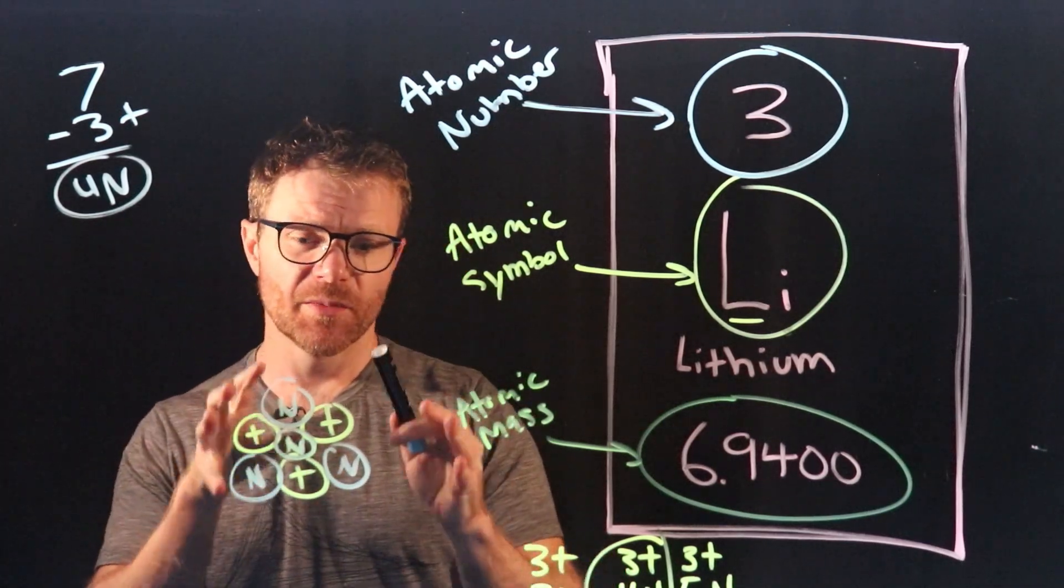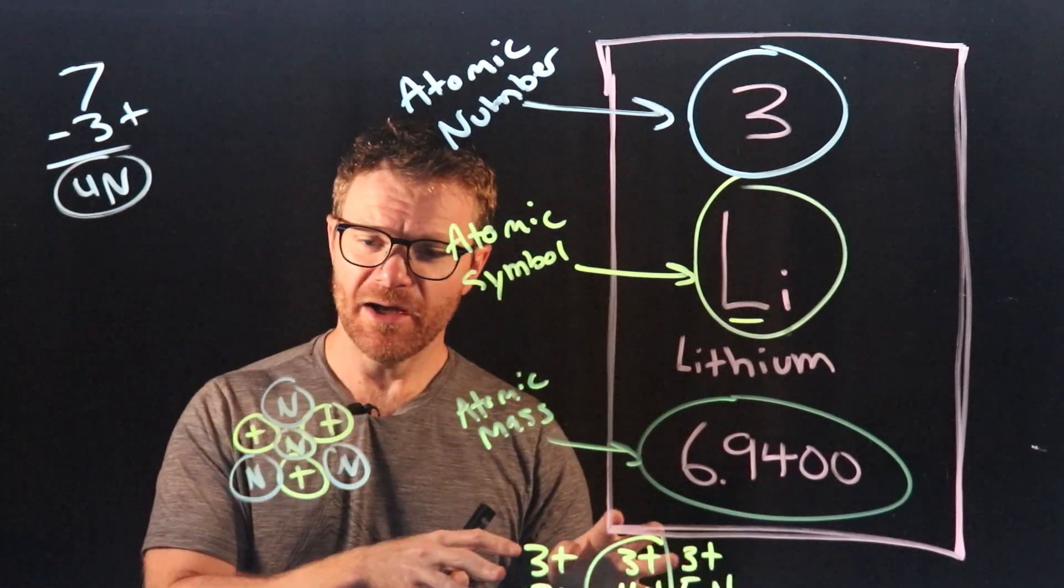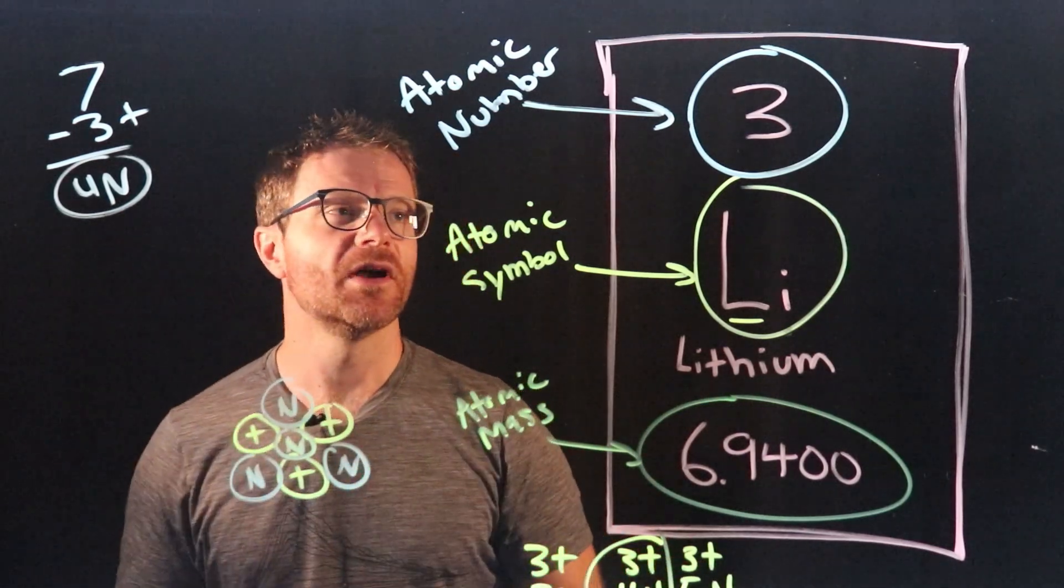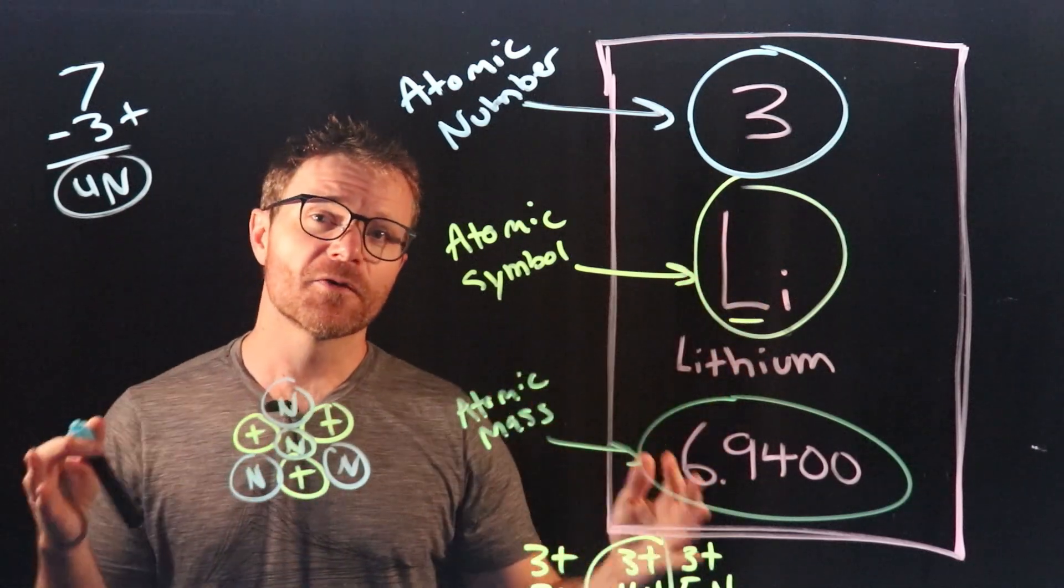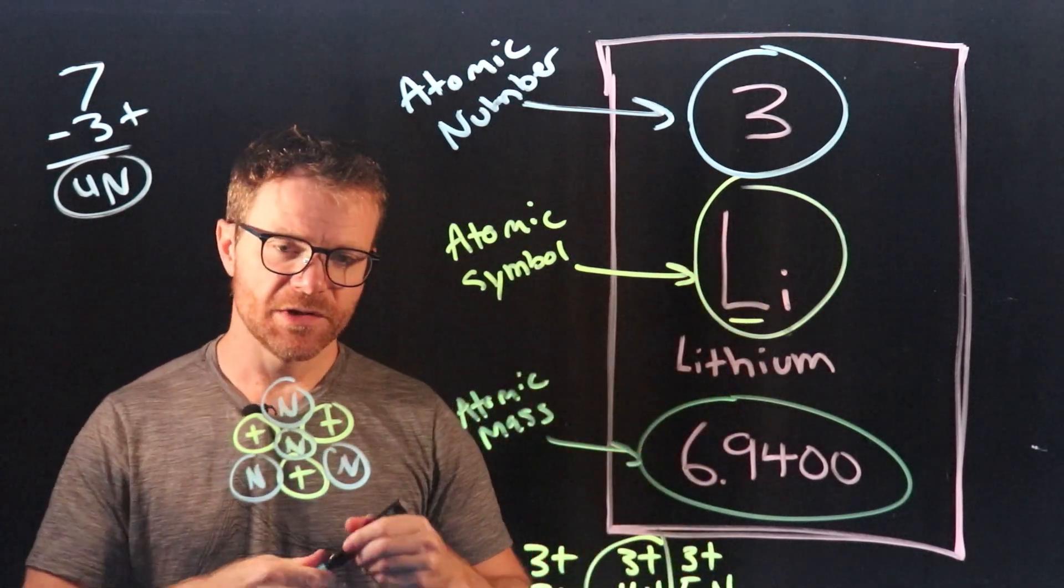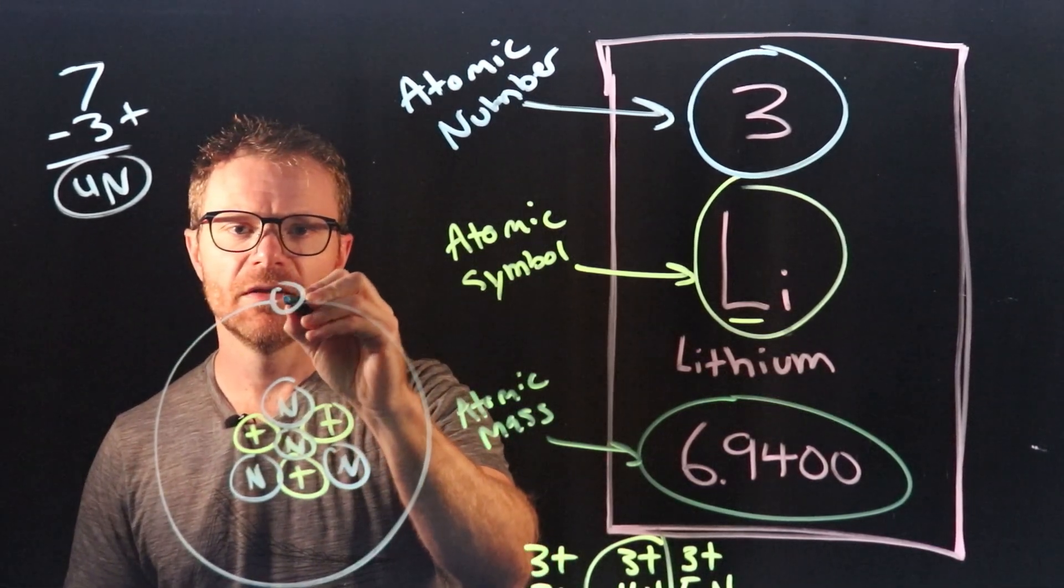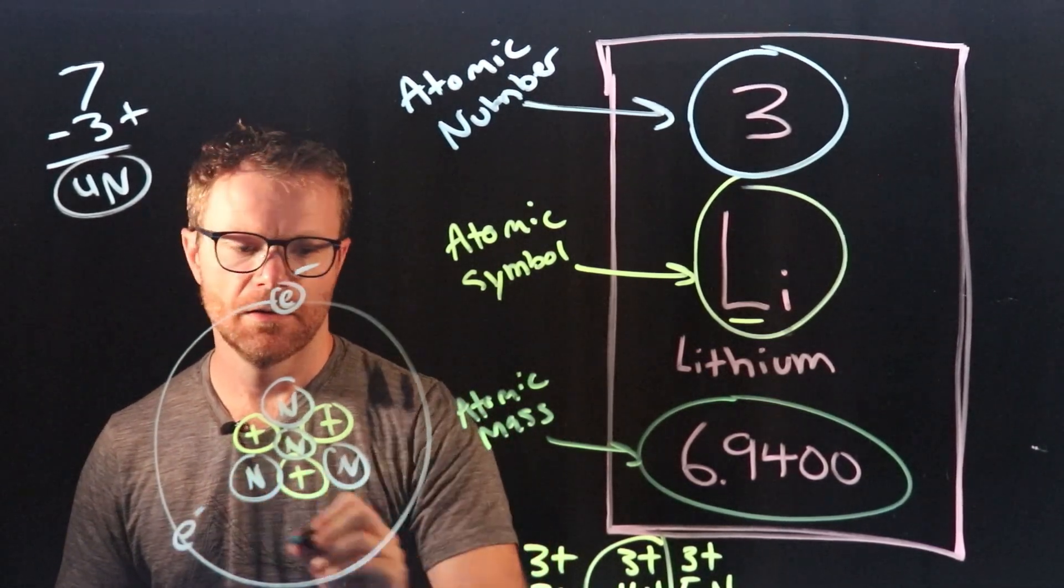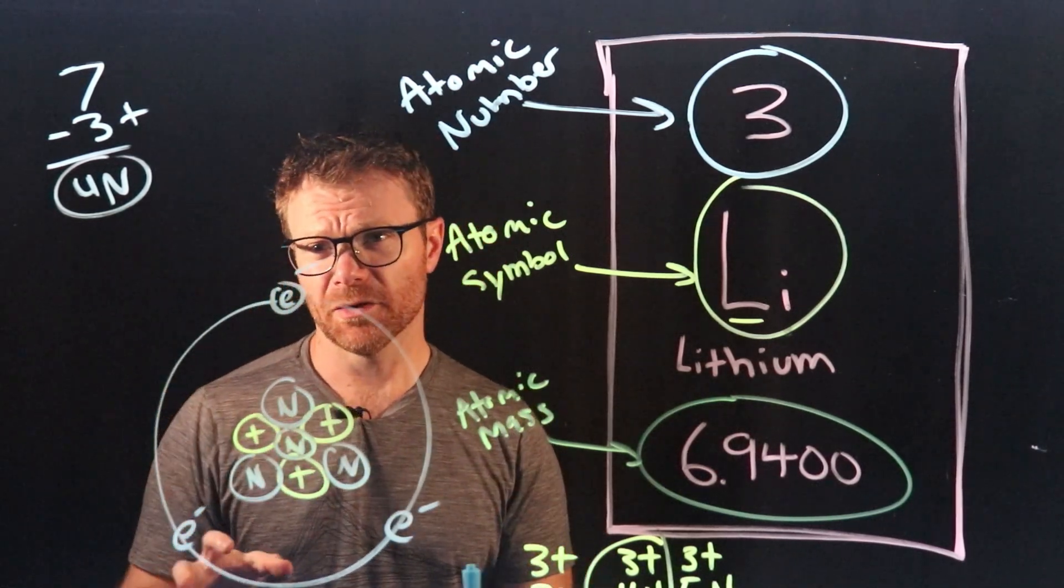Okay now what's the number of electrons? Well if this is a stable atom and not an ion, the number of electrons are always equal to the number of protons. So our atomic number is three. We have three protons. Therefore we have three electrons. So let me just put three electrons around this nucleus. And I have three electrons orbiting the nucleus.